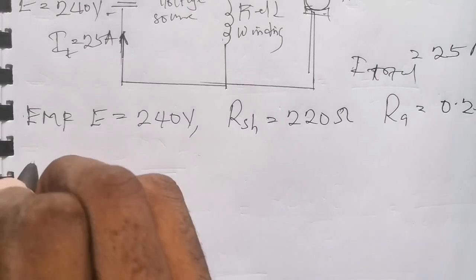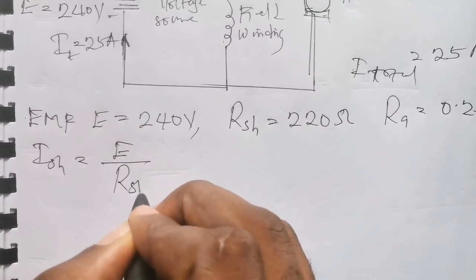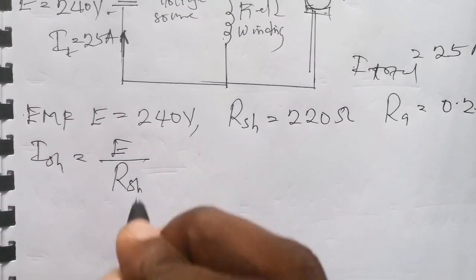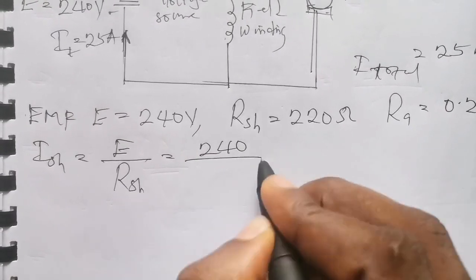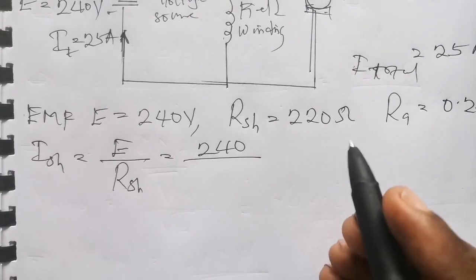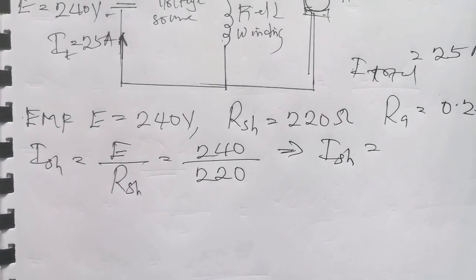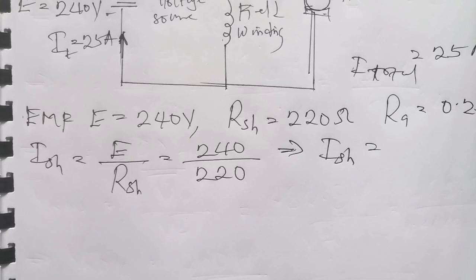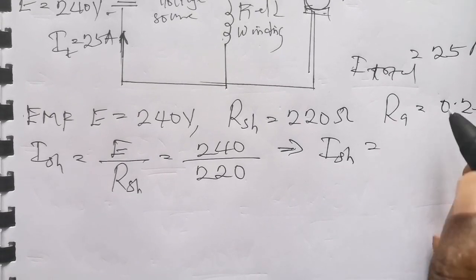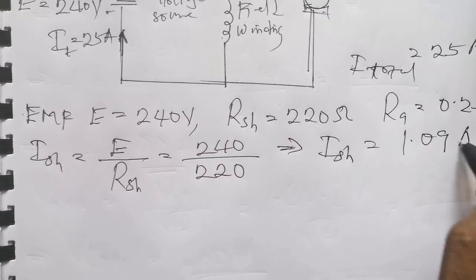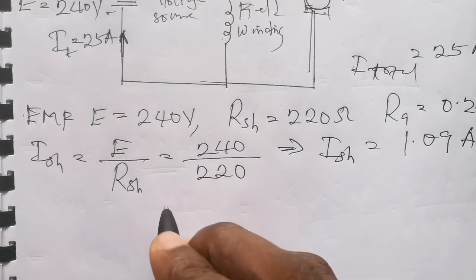To find the shunt field current: Ish = supply voltage divided by the shunt resistance. So Ish = 240 volts divided by 220 ohms, which gives us 1.09 amps. So the shunt current is approximately 1.09 amps — this is the intensity of current entering into the shunt field.